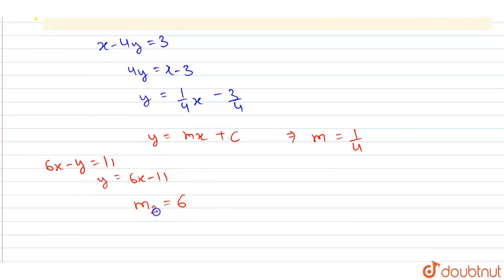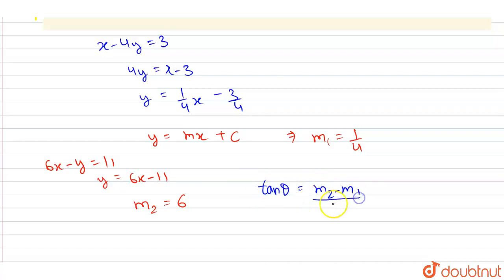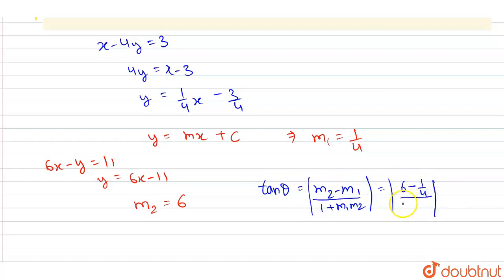So let us name them as m2 and m1, two slopes are here. Now after that, we have to find the value of theta, the angle between them. So we have tan theta is equal to the absolute value of m2 minus m1 divided by 1 plus m1 into m2. This is the formula, because this value will be in positive. So here we have m2 is 6 and m1 is 1 by 4, divided by 1 plus 6 by 4. Now this is equal to 6 minus 1 by 4, which is 23 by 4, and 6 by 4 plus 1 is 10 by 4.